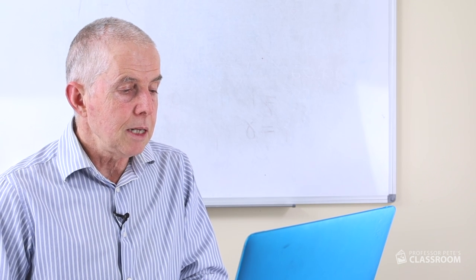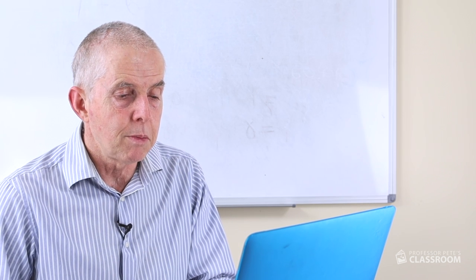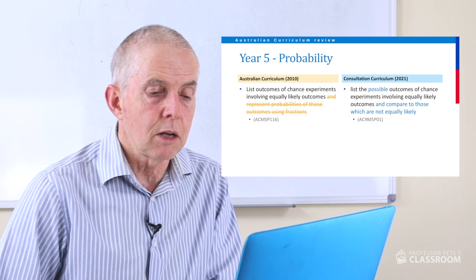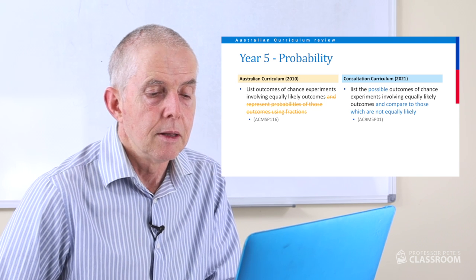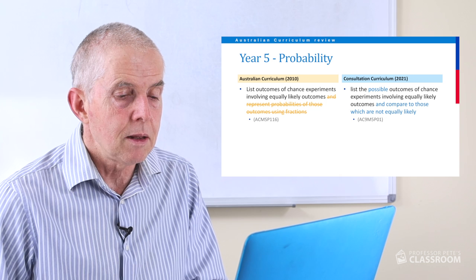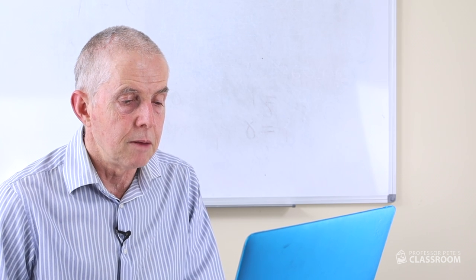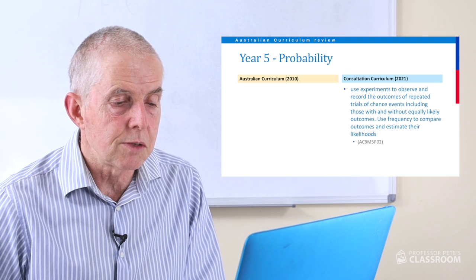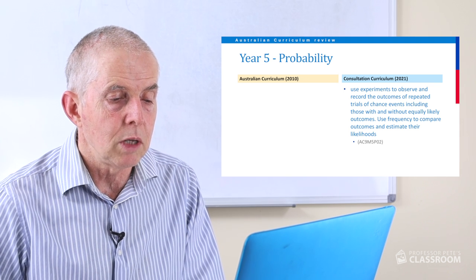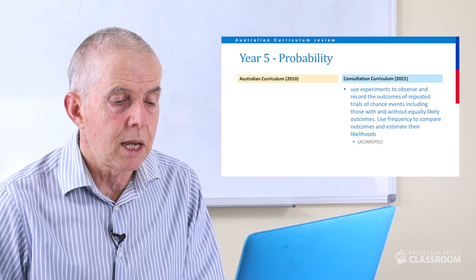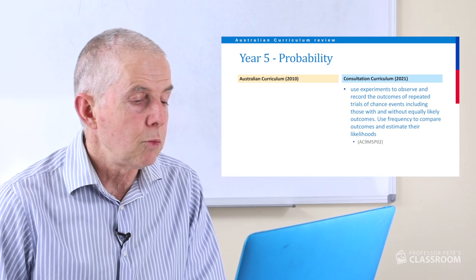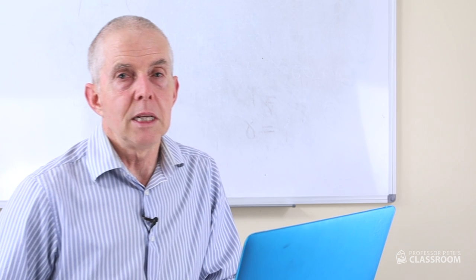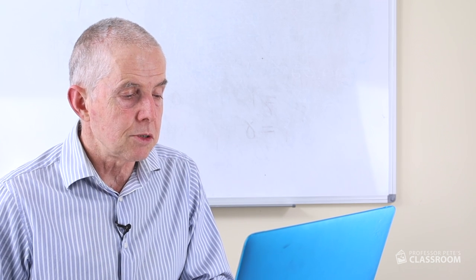Let's look at probability — there are a few content descriptors here. Year 5 probability number one: list the possible outcomes of chance experiments involving equally likely outcomes — that's almost identical to the old one — and compare to those which are not equally likely. Nice expansion there. The second one is all new: use experiments to observe and record the outcomes of repeated trials of chance events, including those with and without equally likely outcomes. Use frequency to compare outcomes and estimate their likelihoods. I always thought the previous curriculum had left probability a bit light on, so I'm pleased to see the extra language being added.